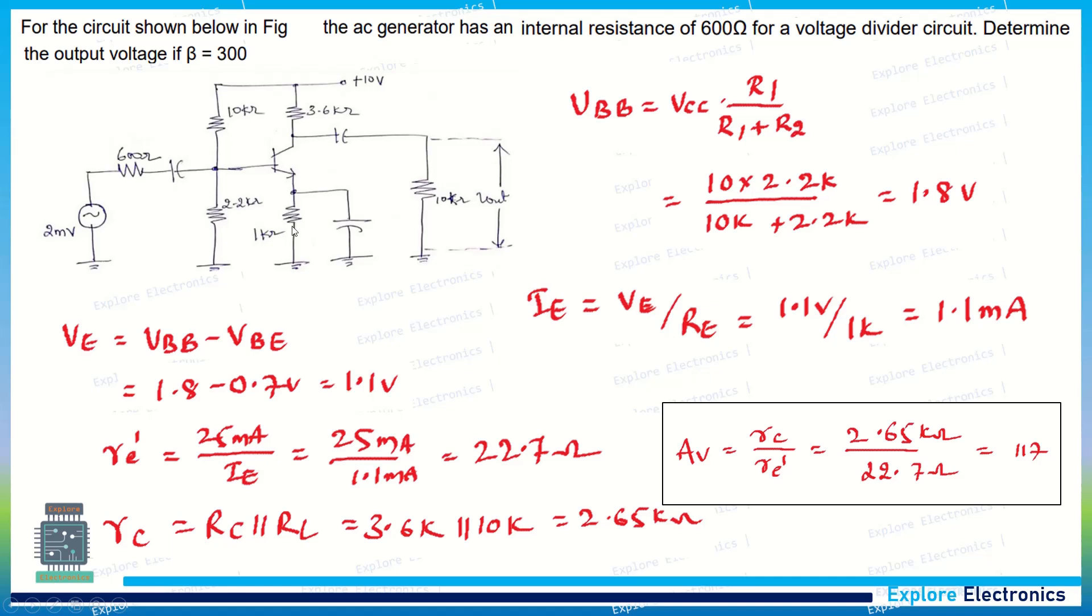Now 1.1 volts divided by 1k, that is the resistance at the emitter terminal, we get 1.1 milliamps as emitter current. Now use this to calculate re', it will be 22.7 ohms.